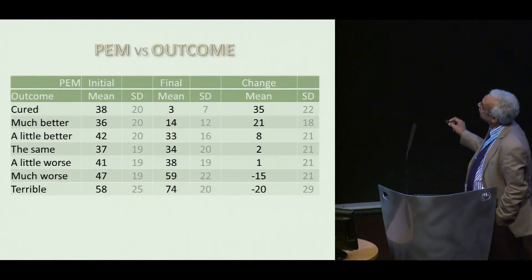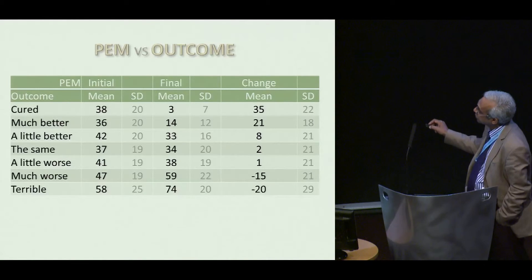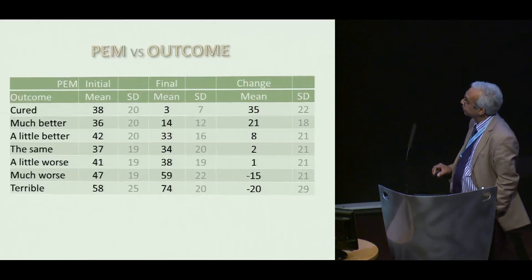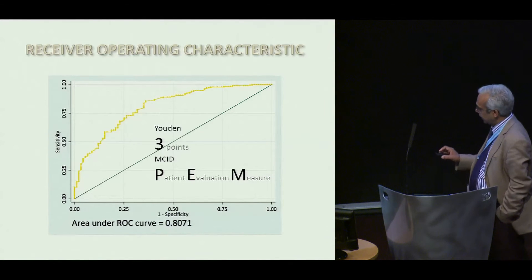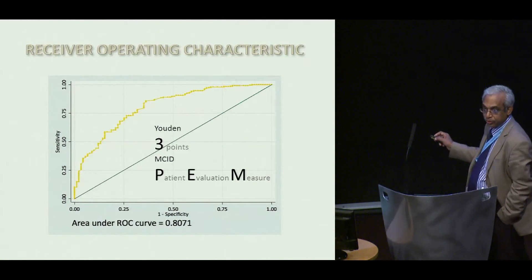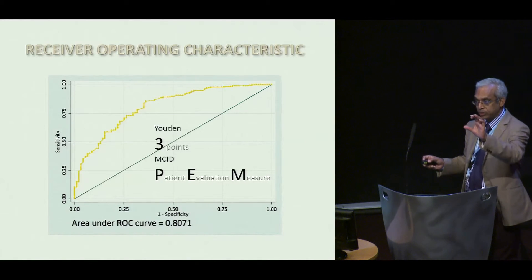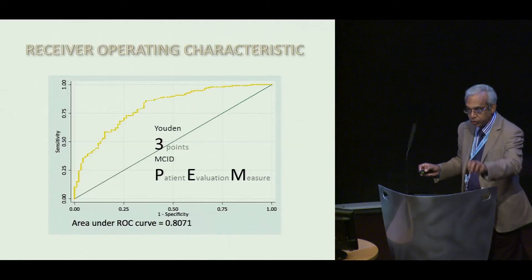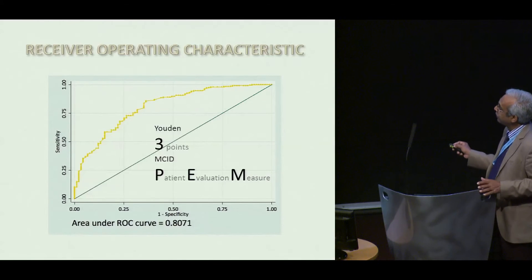You can see that the mean improvement for those that consider themselves cured is huge, and there is no change in those in the middle. So you can use this to do a receiver operating characteristic curve, using sensitivity and specificity to identify the best difference that will pick out those that are better versus worse. That is the minimum difference in the score that the patient identifies as either a slight improvement or a slight worsening, and that is three points.